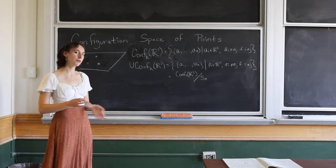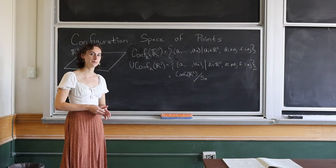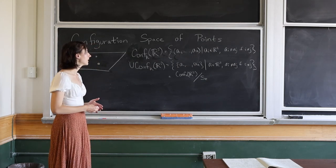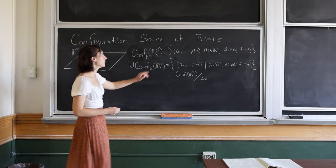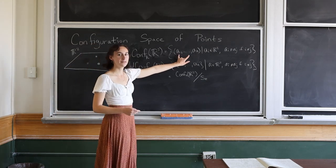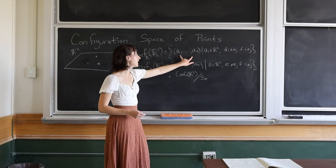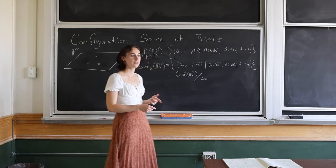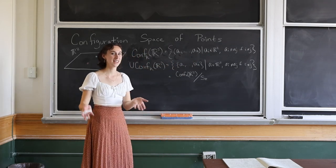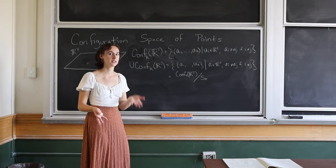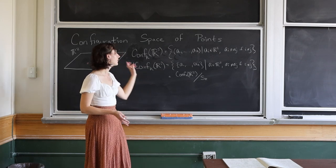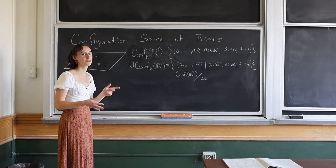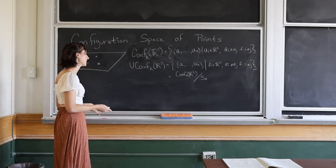Let's establish a few facts about this space. You might notice that we have K points and each of them is a point in R2, so that's two times K dimensions. Both Conf and UConf are 2K-dimensional spaces.